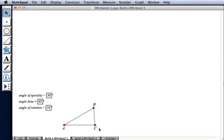Here we have a triangle ABC. Angle A is defined as the angle of spirality, which in this case is 30 degrees. Fusei calls angle B, angle beta, and will soon use the angle of rotation, which is currently 10 degrees.